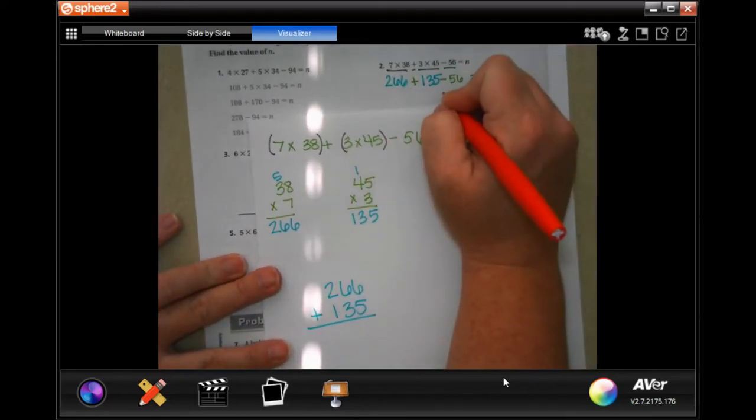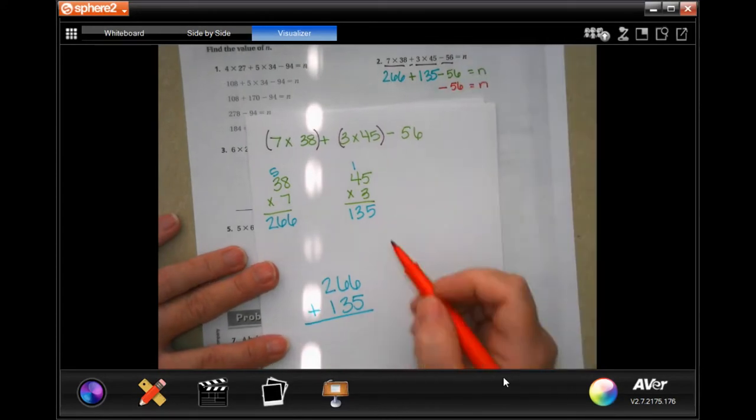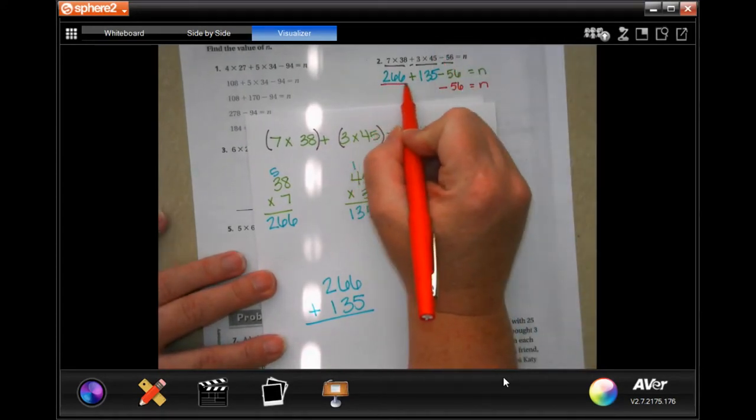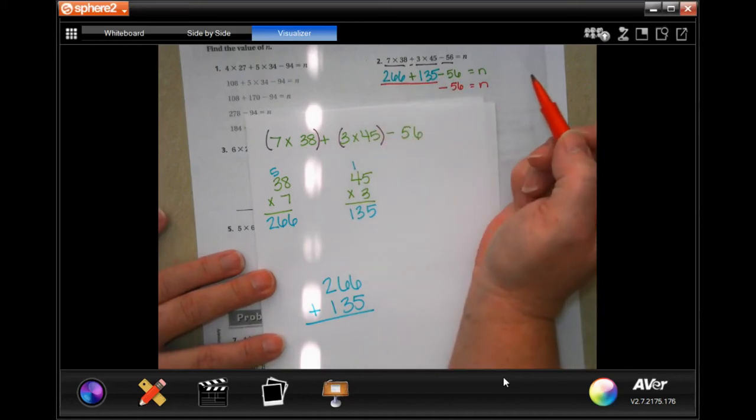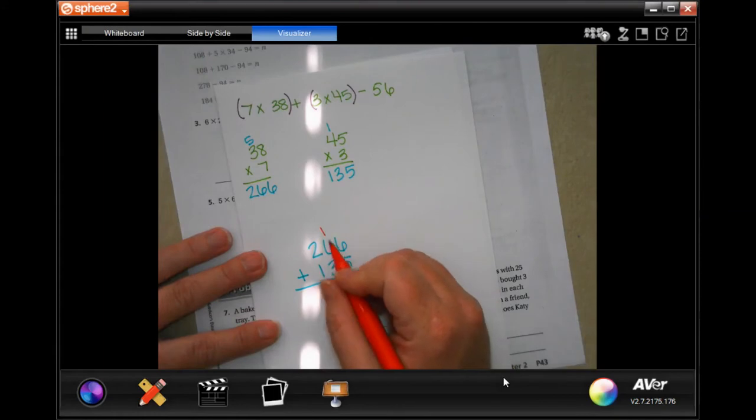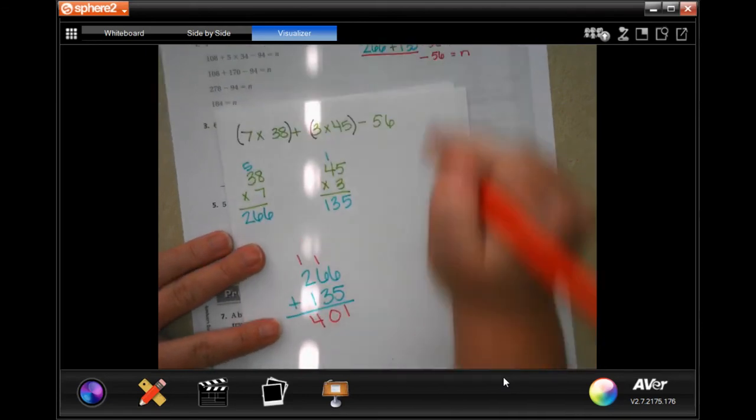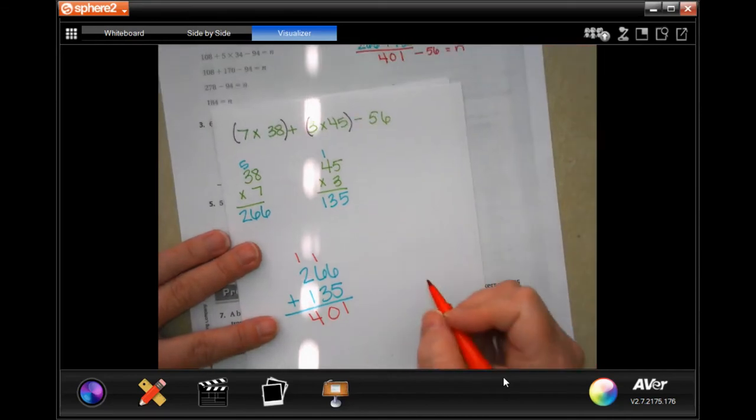Now I'm going to write here, rewrite my minus 56 equals n, because that's not going to disappear just because I'm solving this. So six plus five, 11, carrying my one. One plus six is seven, plus three is 10, carrying my one. One plus two is three, plus one more is four, so 401.